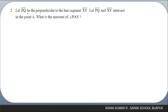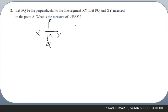Second question: let line segment PQ be perpendicular to line segment XY, and let PQ and XY intersect at point A. Drawing a rough diagram — XY is one line segment and PQ is another; they intersect at point A. The question asks: what is the measure of angle PAY? Angle PAY will be 90 degrees because PQ is perpendicular to XY.